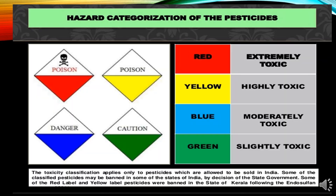Now to study the hazard categorization of pesticides. Pesticides are categorized into four groups. The first is the red group, known as extremely toxic — these chemicals carry poison marking with a skull and crossbones symbol. The second is yellow marking, having a highly toxic nature, also under the poison group. The third is blue categorization, under the danger level, known as moderately toxic. And the fourth is the cautionary green level, having slightly toxic nature.